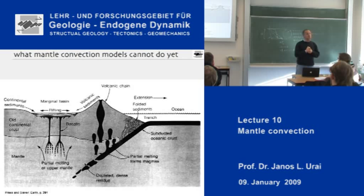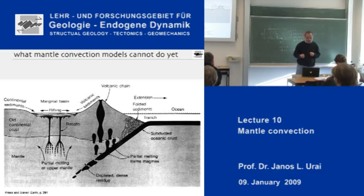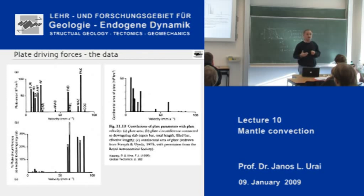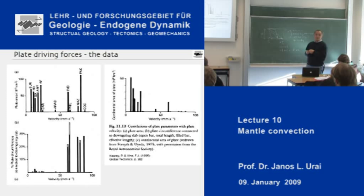So the plates are moving to a certain extent independently of the convection cells — they have a certain freedom to do things different from the motions of the convection cells. This is shown from a textbook decomposing the ridge push force and the slab pull force, with shear forces from convection currents in the mantle at the bottom. The question is: how do we find out which of these forces are more important than the others? And for that there are classic studies from around 1975, the time when plate tectonics was truly a revolution.